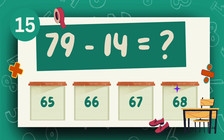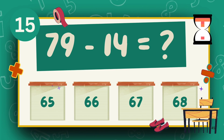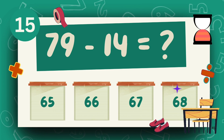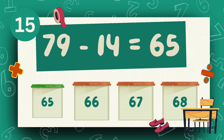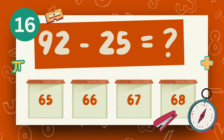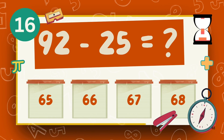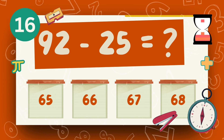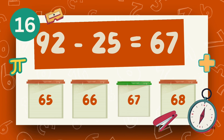What is 79 minus 14? The answer is 65. What is 92 minus 25? The answer is 67.